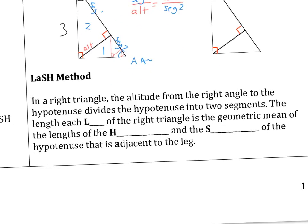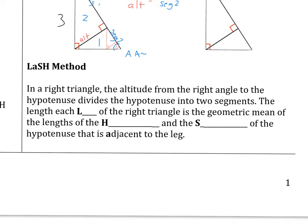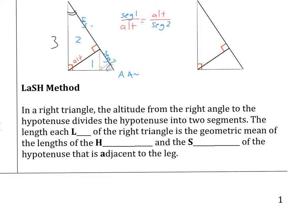So now this next method, and this will be the last one we'll look at for this, and then we'll just practice, practice, practice. I call it the LASH method only because that's what I came up with. In a right triangle, the altitude from the right triangle, so here's our altitude drawn right there, from the right angle to the hypotenuse divides the hypotenuse into two segments, same as. But the length of each leg, the length of each leg. So here is a leg. So I'll call it leg one. In this case, leg one.